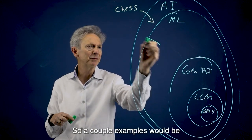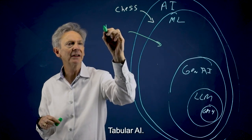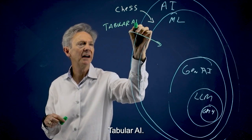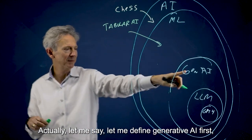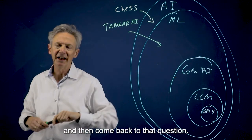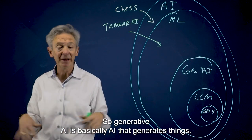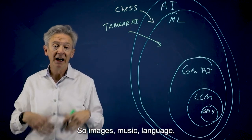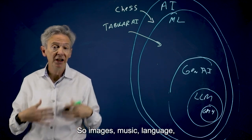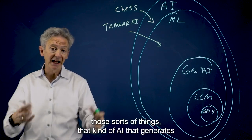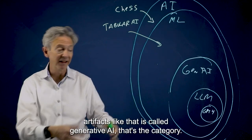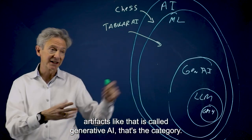So what would be an example of machine learning that's not generative AI? Let me define generative AI first, and then come back to that question. So generative AI is basically AI that generates things. So images, music, language, those sorts of things. AI that generates artifacts like that is called generative AI.